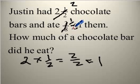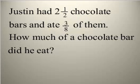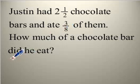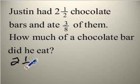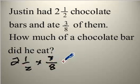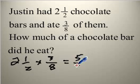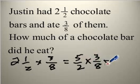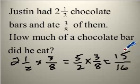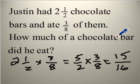Now let's try it with the original numbers. I know I need to multiply the total by the fraction: two and a half times three eighths. I change two and a half to an improper fraction — that's five halves — times three eighths. I multiply the numerators and multiply the denominators. Checking that we can't simplify, he ate 15 sixteenths of a chocolate bar.